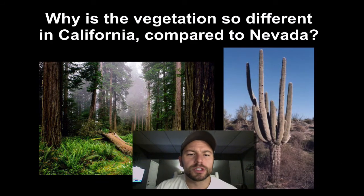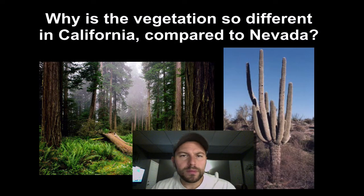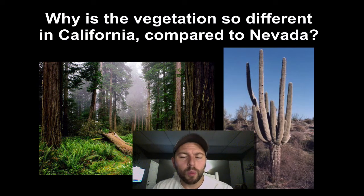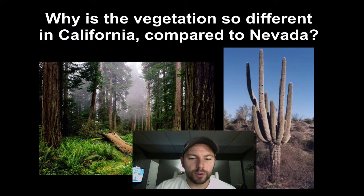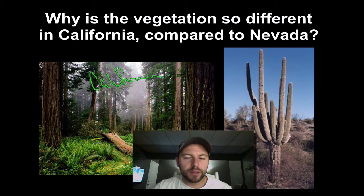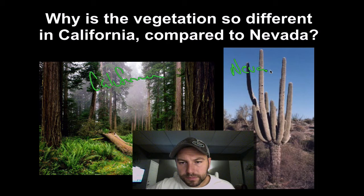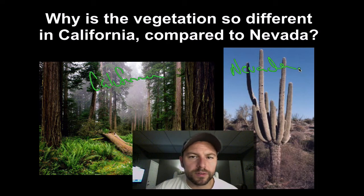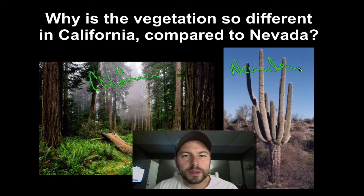We first need to start with the question: if we look at two areas along the same line of latitude and very close to each other in the United States, we want to look at why they're so different. An example we can use is California and Nevada. You can see that California is this nice lush green landscape, and then if we go over to the east a little bit more, we have Nevada — they're definitely drastically different between the two locations. So what's going on with these two areas that make them so different?